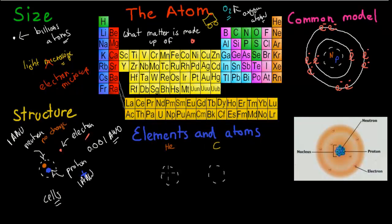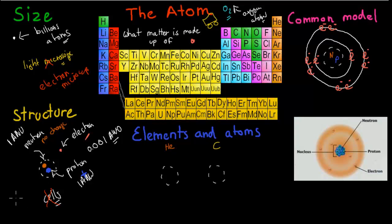If you said false, you are correct. The reason why is that everything was actually correct — the neutron has no charge, the electron has a negative charge, the proton has a positive charge, the weights are correct, the positions are correct. The thing that's not correct is the word used for them. It's not 'cells' — it's 'subatomic particles.'